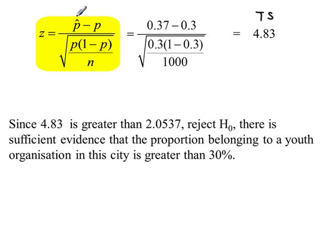Again, in the formula here, p-hat is this single value here, 0.37. All of the other values here are p, and they are 0.3. And n, our total random sample size, was 1,000.